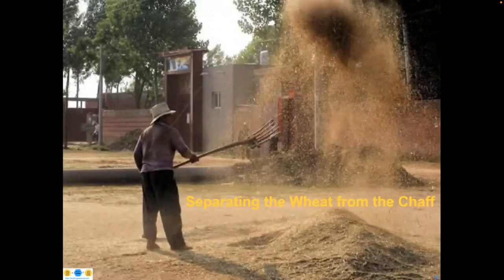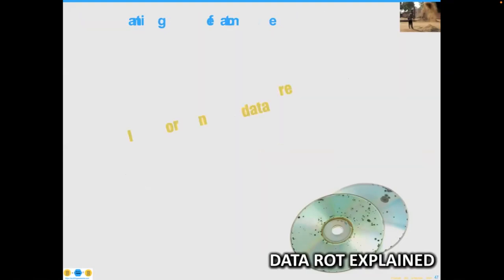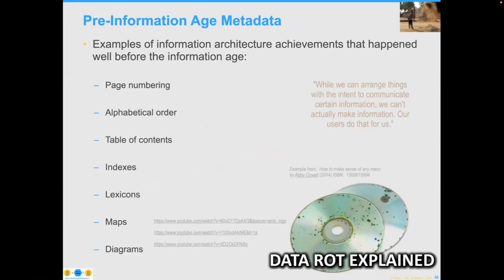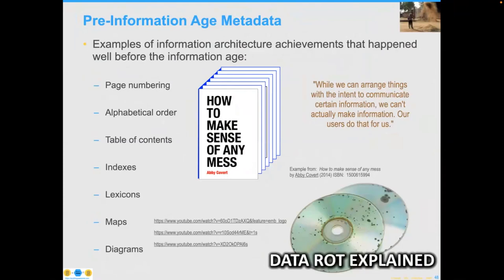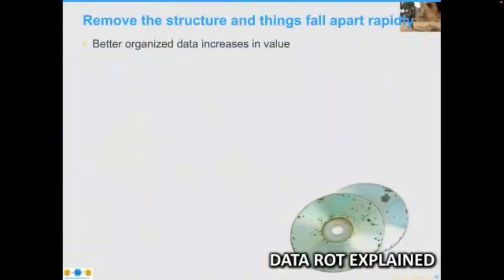When looking at data overall, it becomes a process I call separating the wheat from the chaff. The question is: is well-organized data worth more than less well-organized data? To help people understand that, I reference a wonderful book called 'How to Make Sense of Any Mess' by Abby Covert — an excellent explanation of information architecture. Imagine taking the spine off of Abby's book and distributing the pages without page numbers — that data becomes ephemeral very quickly. So yes, better-organized data increases in value.